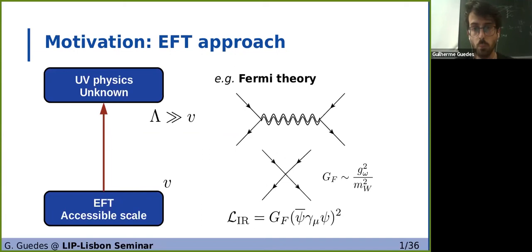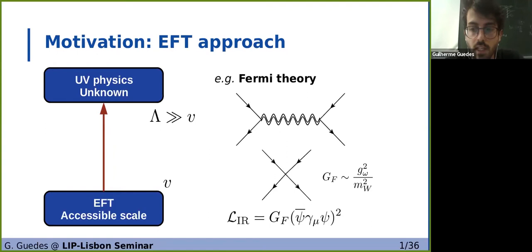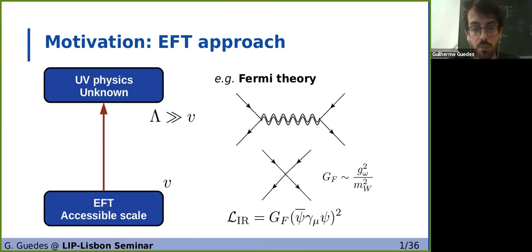Let me start with a brief introduction to effective field theories. We have yet to see a significant deviation from the standard model, and so it is normal to consider that a scale of new physics would lie at energies much larger than the electroweak scale. This allows us to think of the standard model as an effective field theory — the low energy limit of a more fundamental UV description with unknown physics. We parameterize the effects of this unknown physics into operators constructed only with the degrees of freedom accessible to experiments, in this case the standard model degrees of freedom. By doing this, we can study the low energy effects of UV physics without committing to a specific UV completion, only searching for deviations from the standard model.